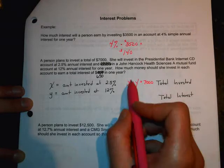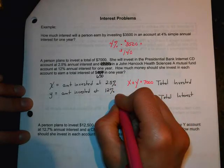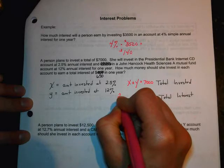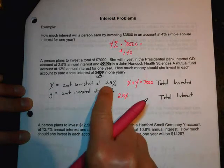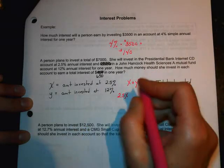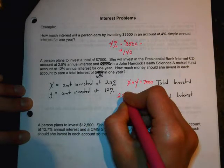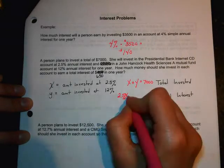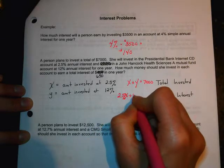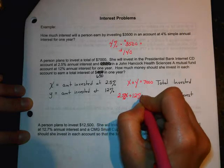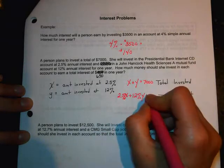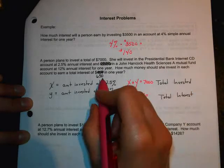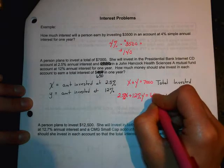She took the $7,000 and split it up. Part of it was at 2.5%. And the other part was at 12%. And when we add those two amounts that she split up, that gave us $7,000. So, that's the total that she invested. For the total interest, she's earning 2.5%. So, she's earning 2.5% of the X dollars she invests at 2.5%.